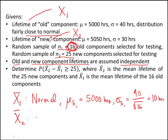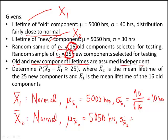For X-bar₂, we're taking a sample size of 25, so by the central limit theorem we have normality. The mean of X-bar₂ will be the same as the original mean of the new component lifetime, which is 5,050 hours. The standard deviation will be 30 hours divided by the square root of 25, which gives 6 hours. So now we have the distributions of both X-bar₁ and X-bar₂, and we need the distribution of X-bar₂ minus X-bar₁.